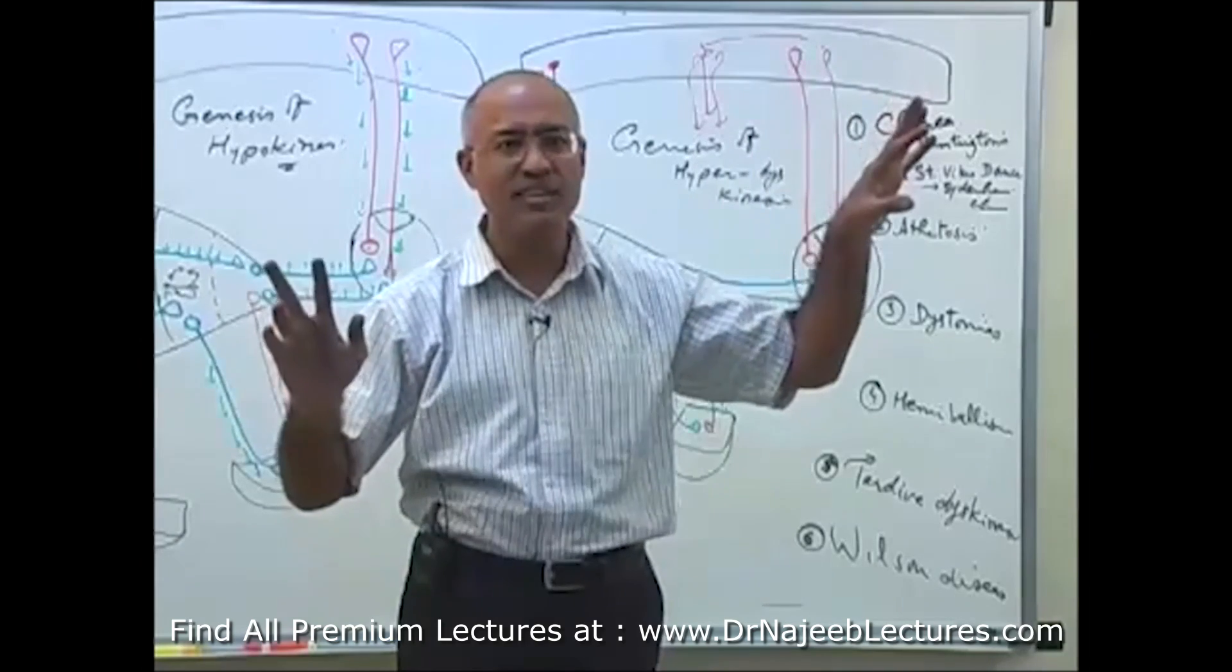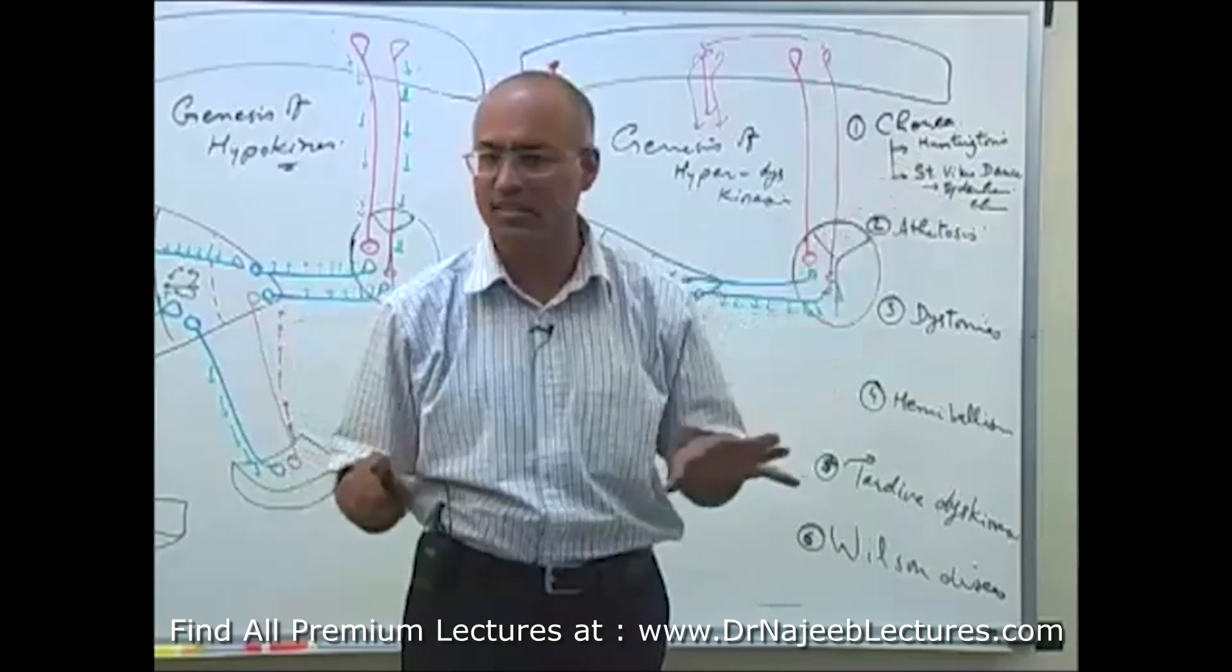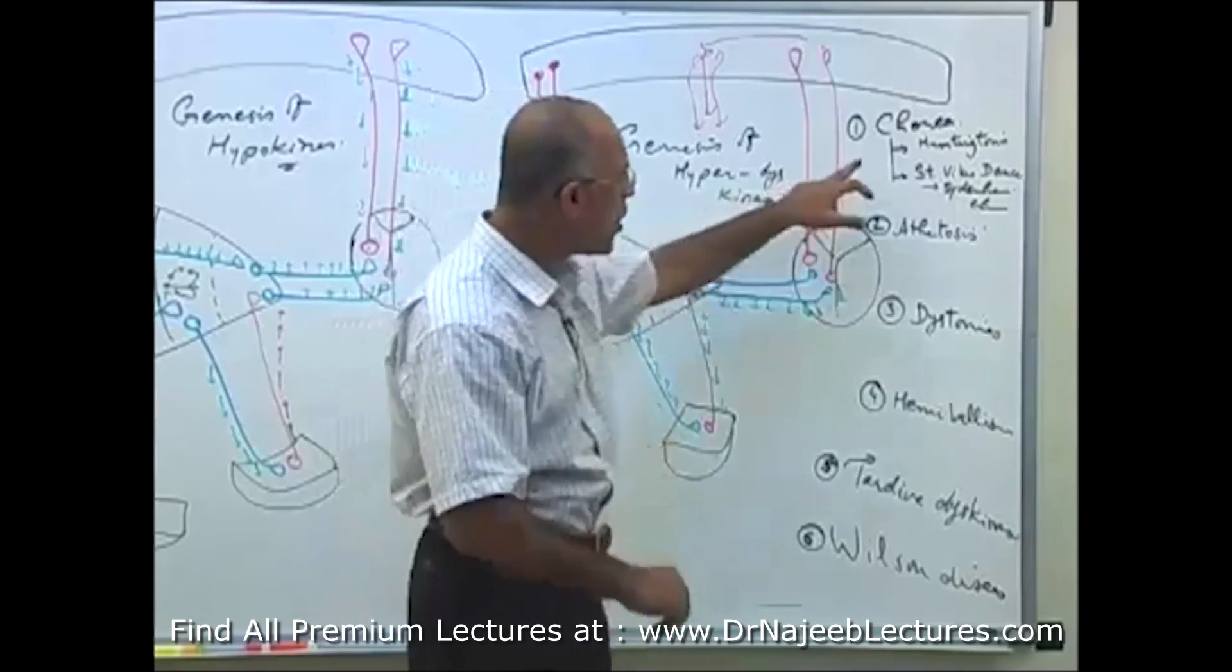So, what happens? In chorea, from central nervous system, motor programs which are stored, they are haphazardly released, or their components are released, and they result into sudden, uncontrollable, or involuntary, purposeless movement. You understand? Chorea, so it's just like a Michael Jackson latest dance. Now, how chorea can occur?